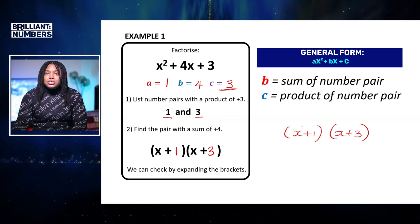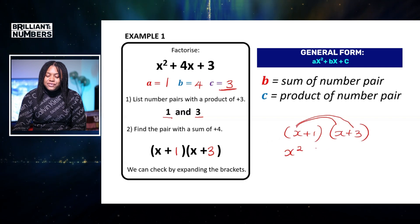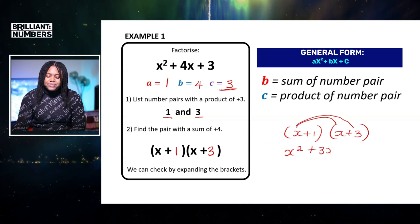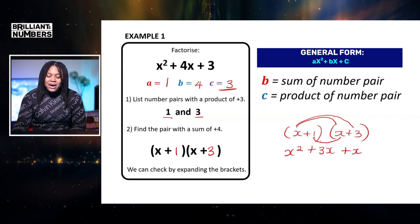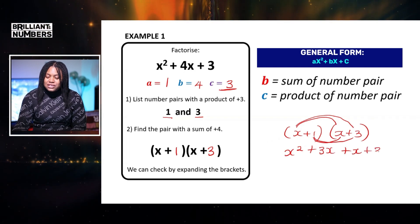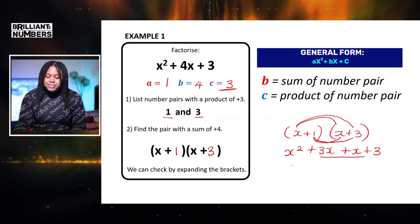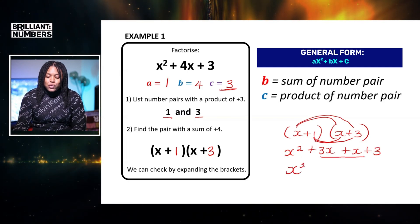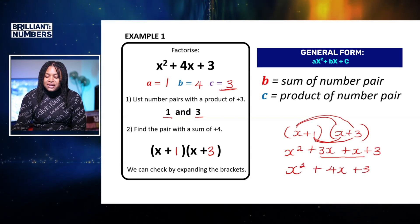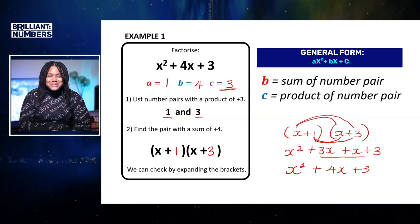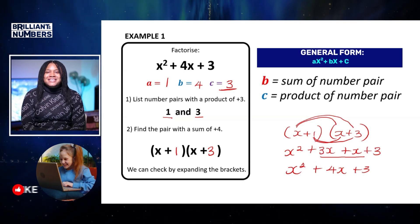So x plus one and x plus three. So to prove this, I need to do x times x which is x squared, x times three which is 3x, x times one which is x, and one times three which is equal to three. Now all I need to do is to simplify the b terms in the middle. So I've got x squared plus 3x plus x plus 3. And yes, we're right back to where we started. So I'm now sure that my answer is correct.